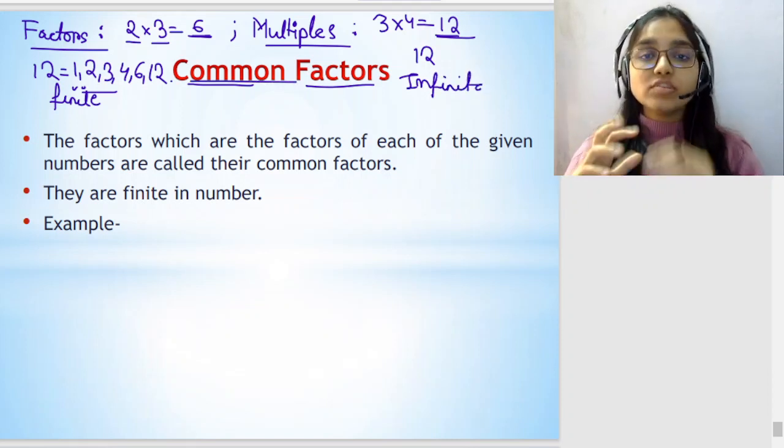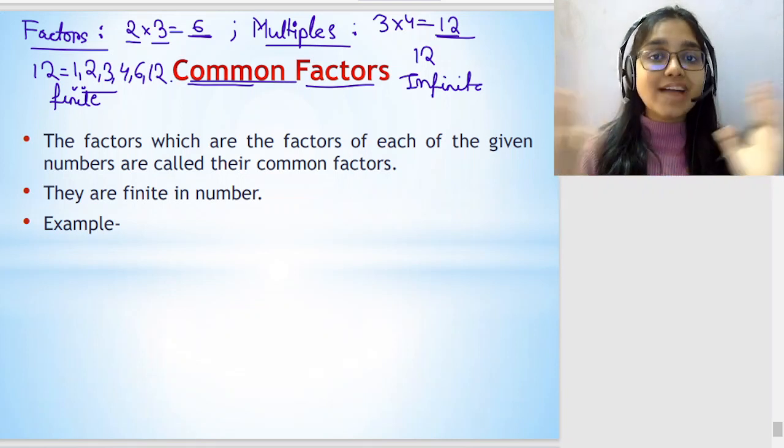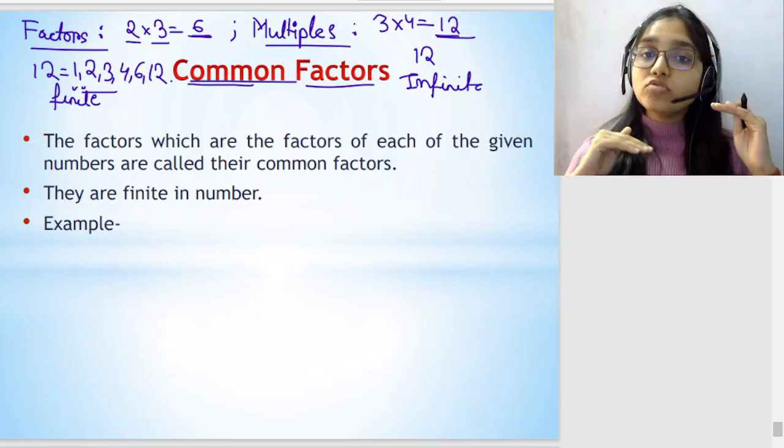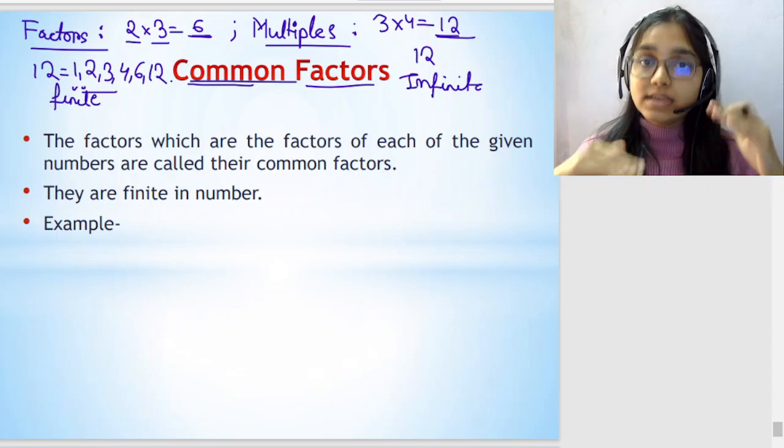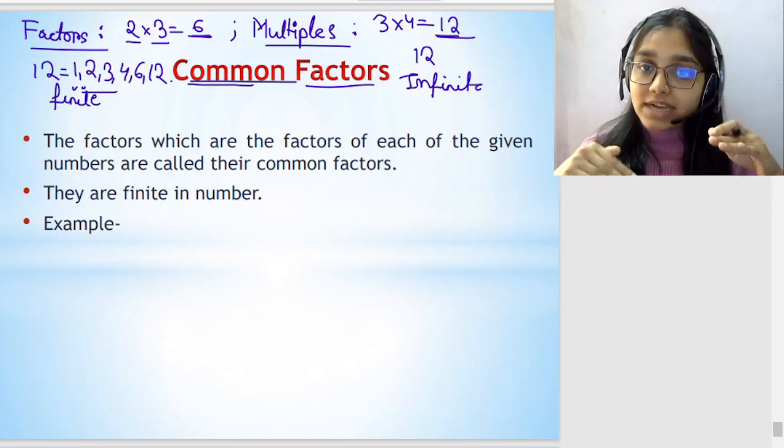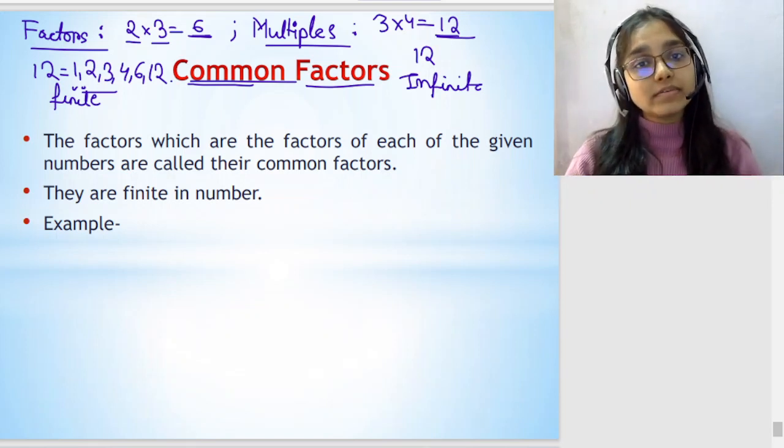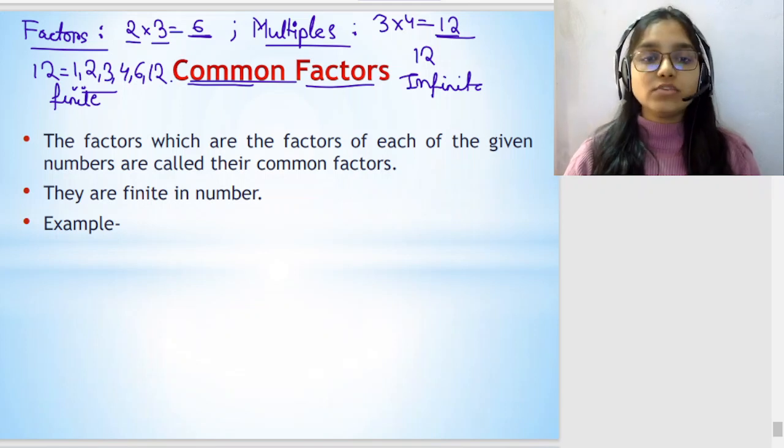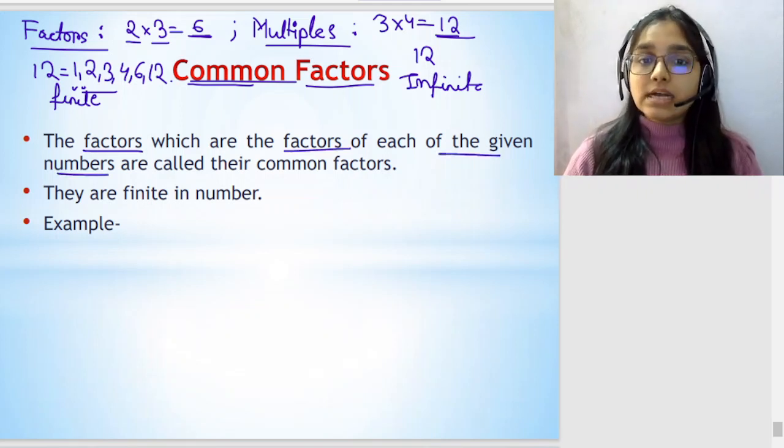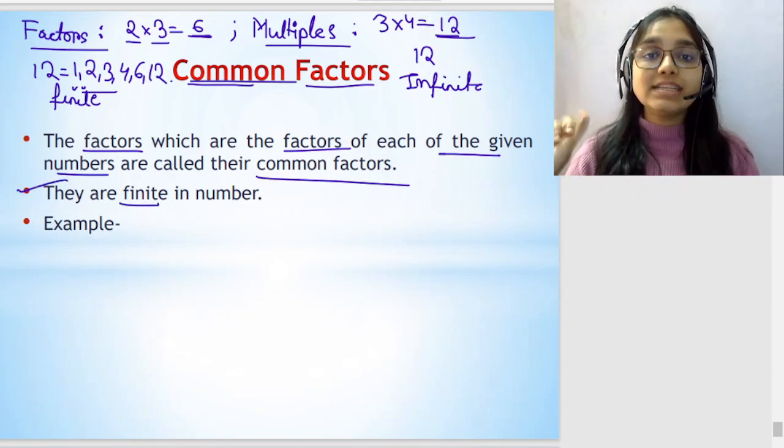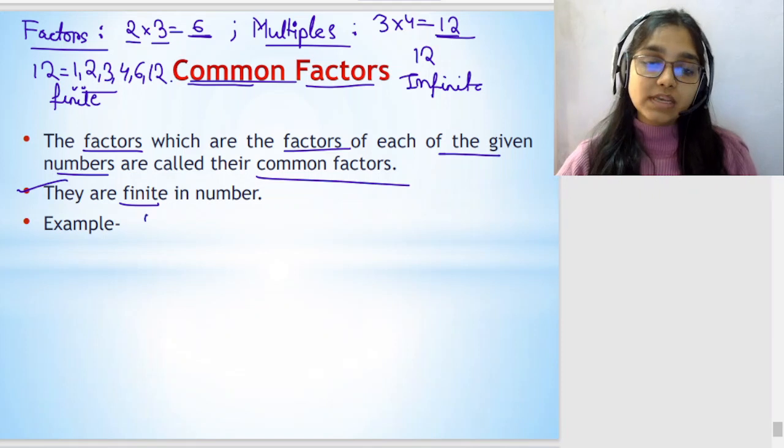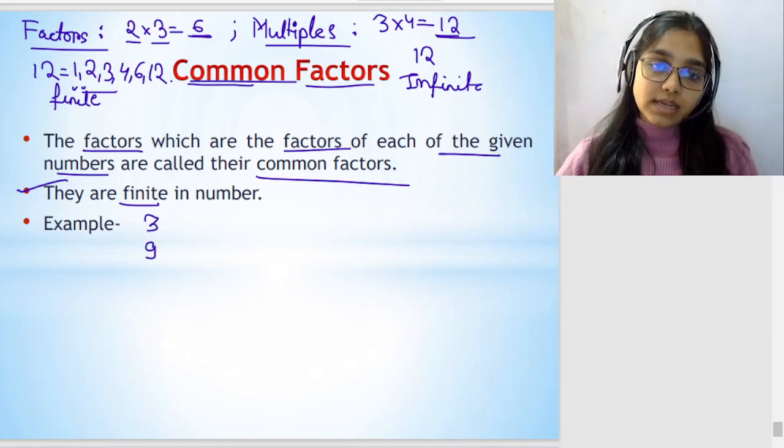Now let's talk about common factors. So when two or four numbers are given, we need to find their factors. Now whichever factors are common among those numbers, that is the common factor. We'll understand with an example. The factors which are the factors of each of the given numbers are called their common factors. They are finite in number. Example: 4, 6, 12.